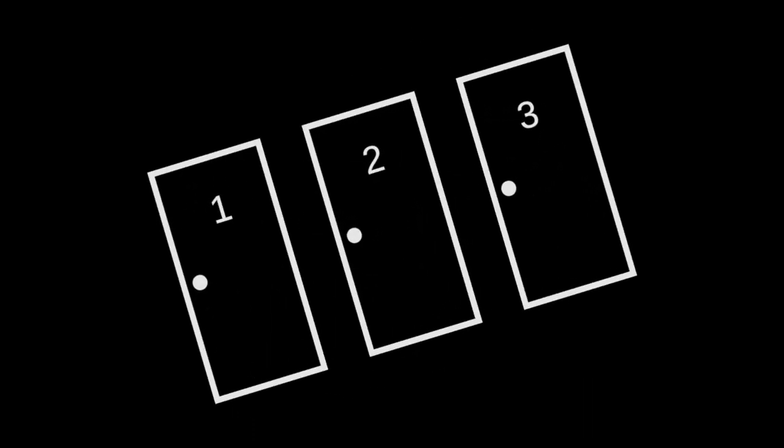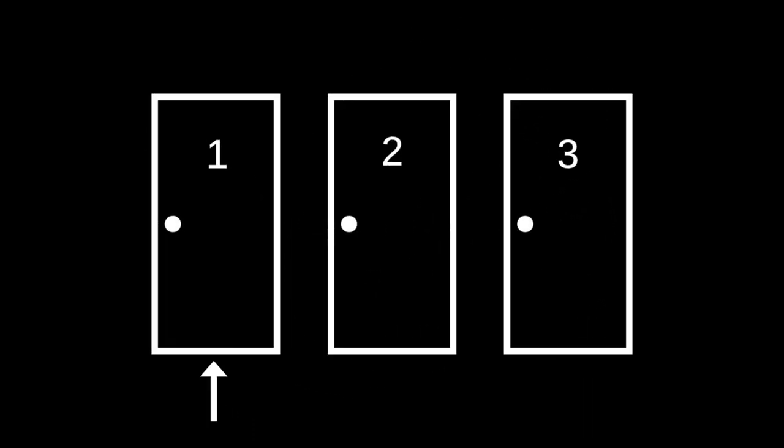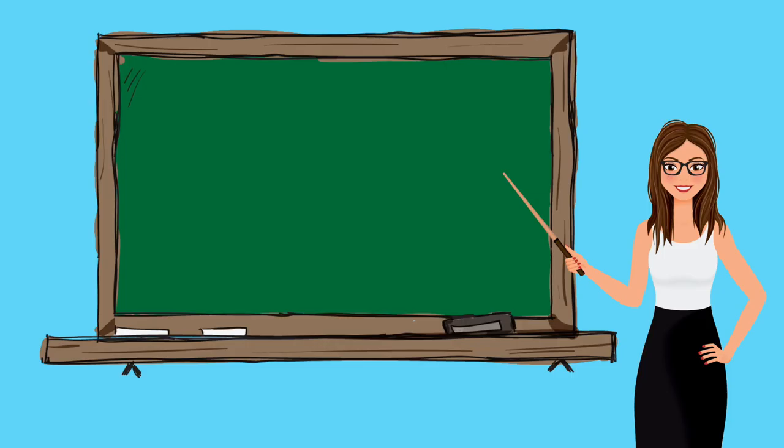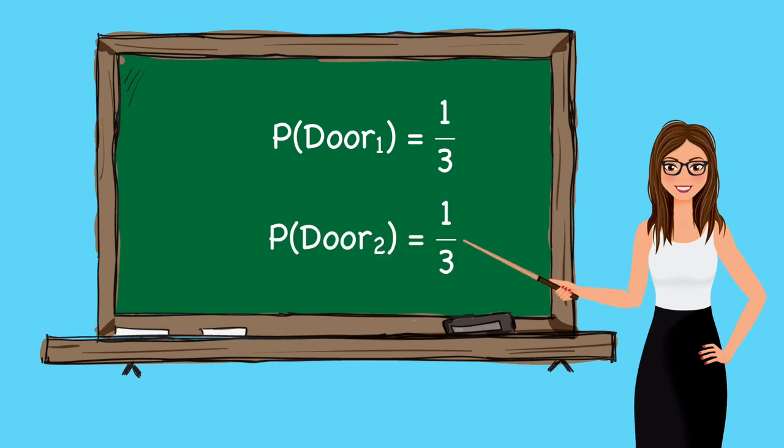So let's go back to our scenario. The contestant chooses door 1. Monty chooses door 3 and reveals the goat. So now the car is either behind door 1 or door 2. This is event A and has two possible outcomes to compute. First, let's look at the priors. At the outset, the probability that the car is behind door number 1 is one-third. Similarly, the probability that the car is behind door number 2 is also one-third.